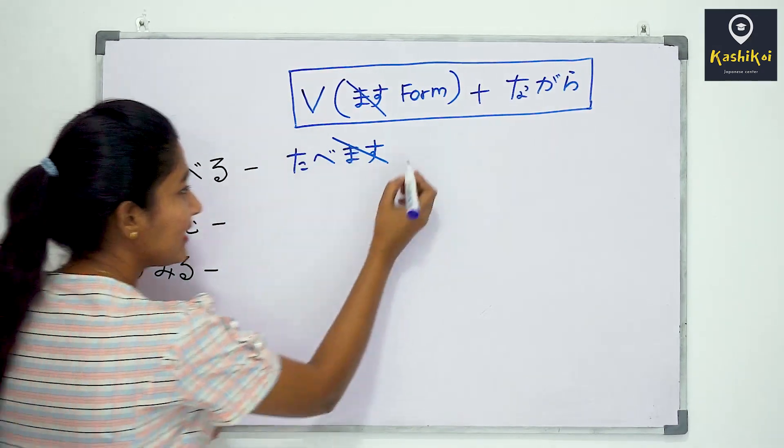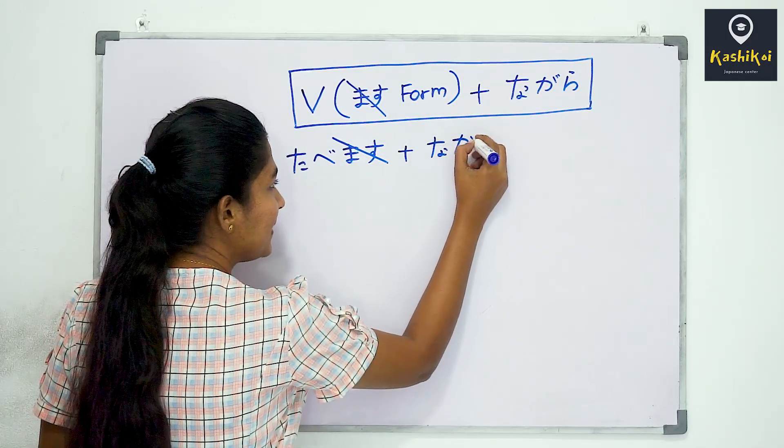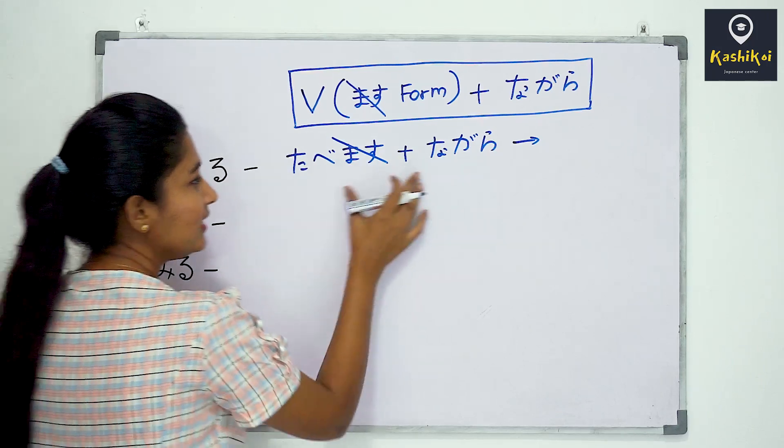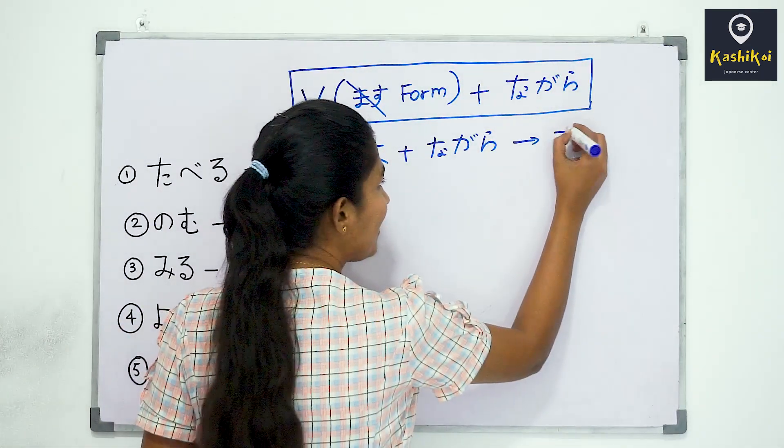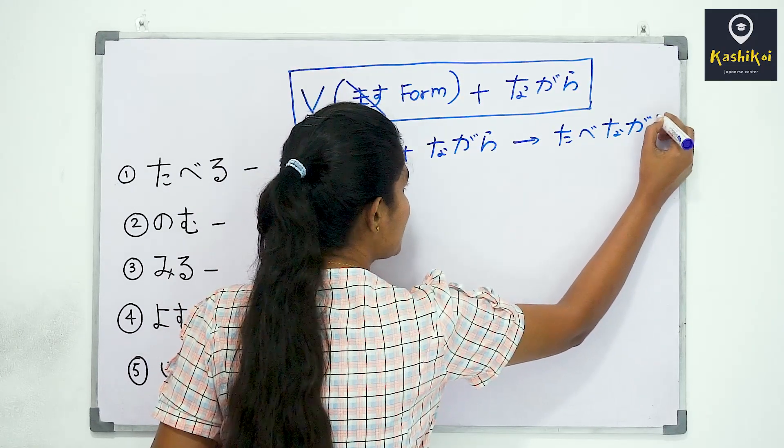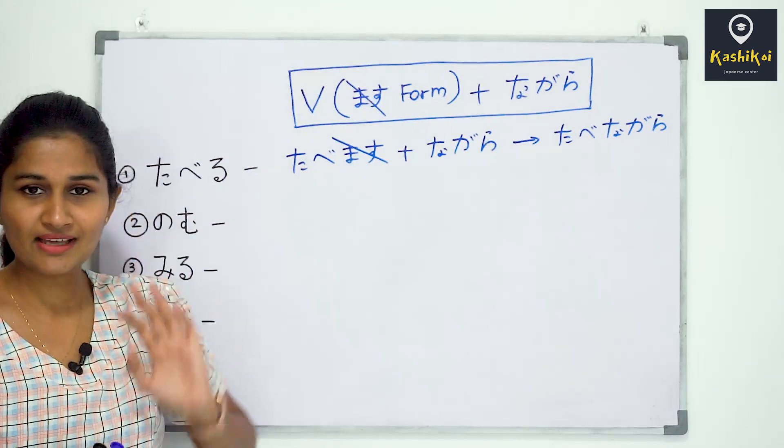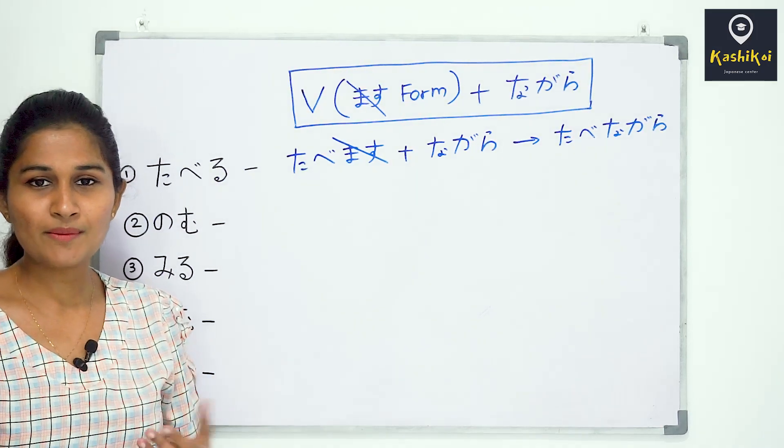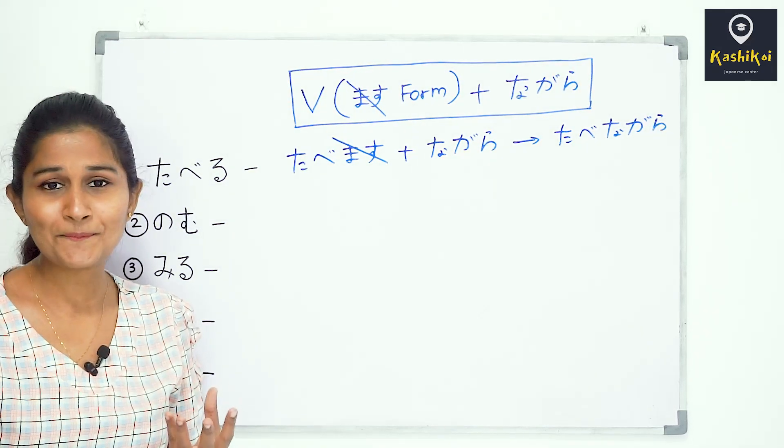When you bring it back from dictionary form to masu form, the verb changes. For example, if you have work in the past, you need to understand these conjugations. If you have any questions, please drop them in the comments.